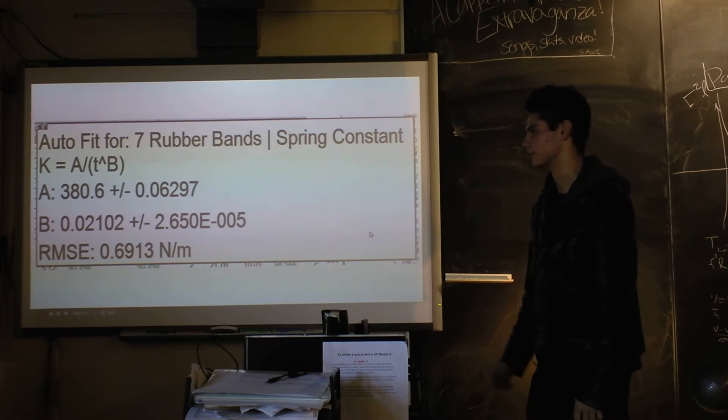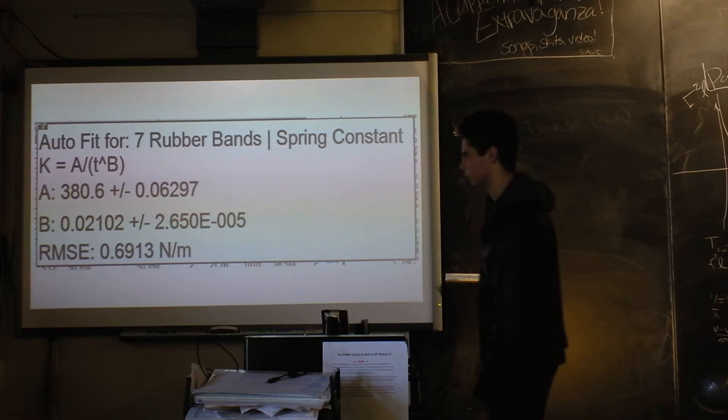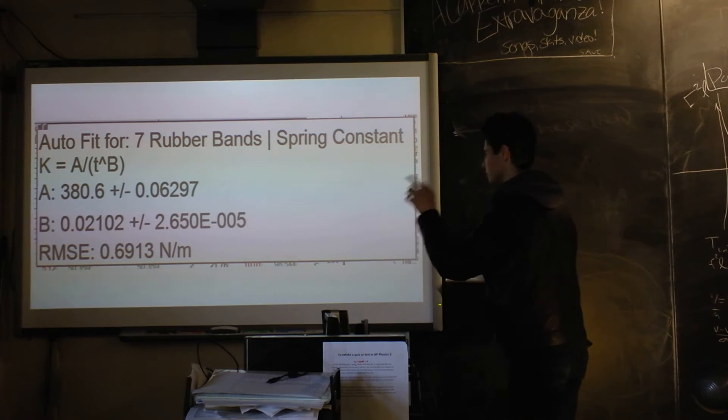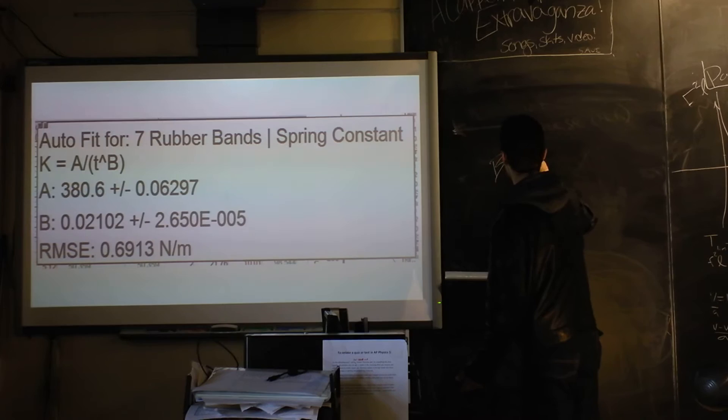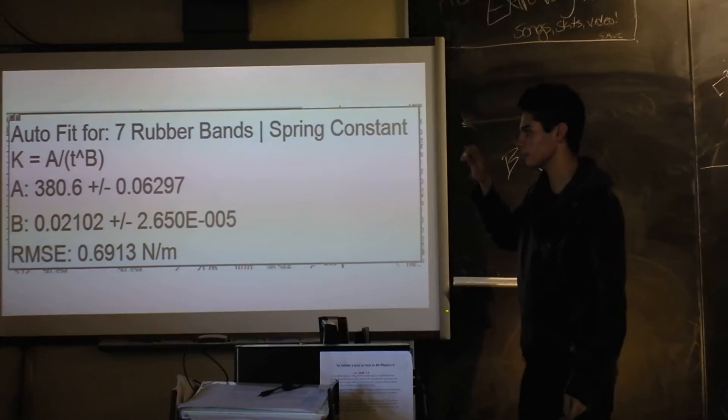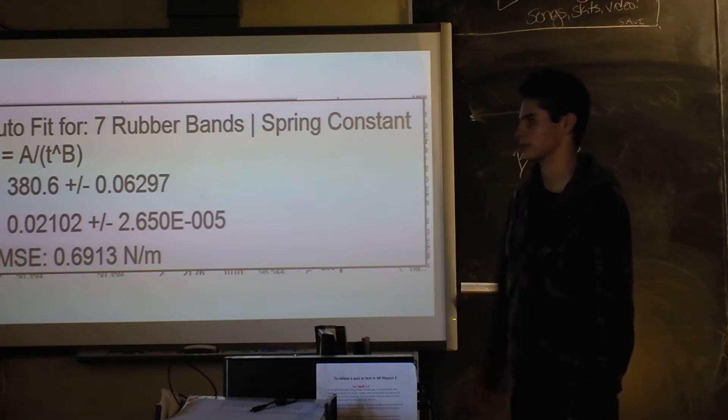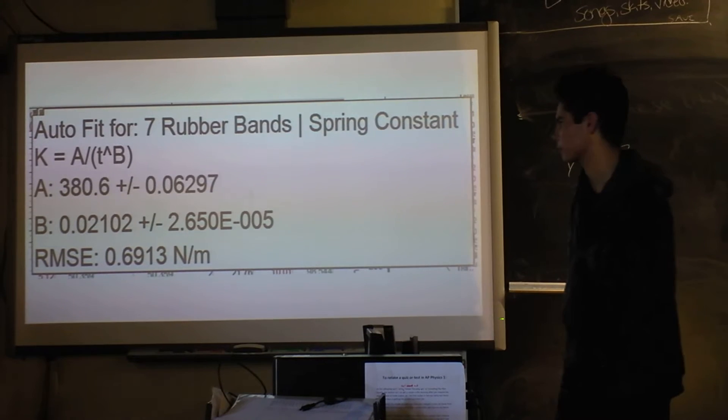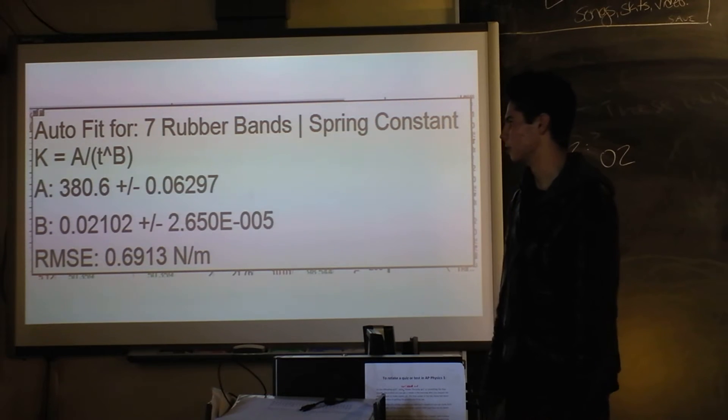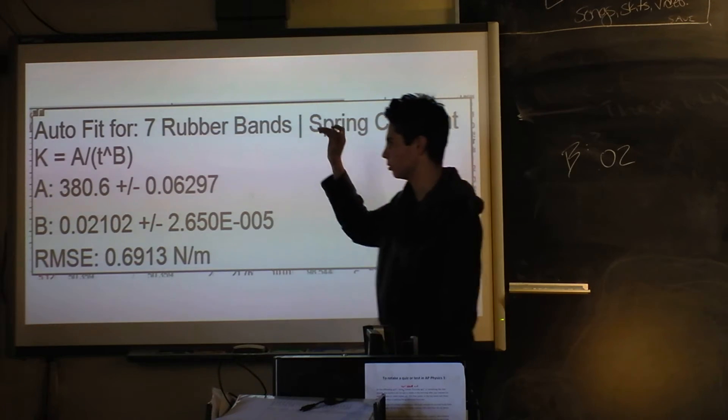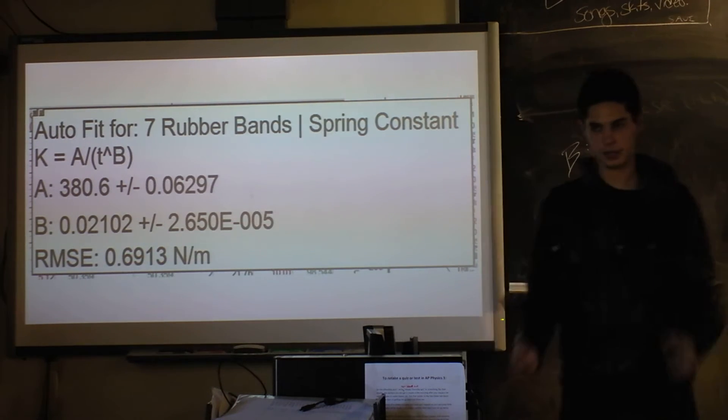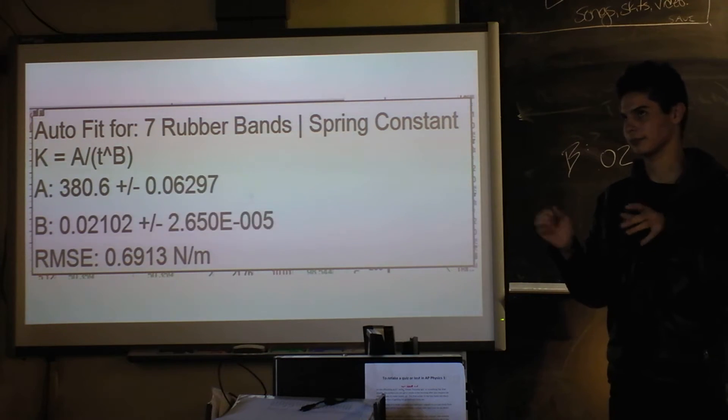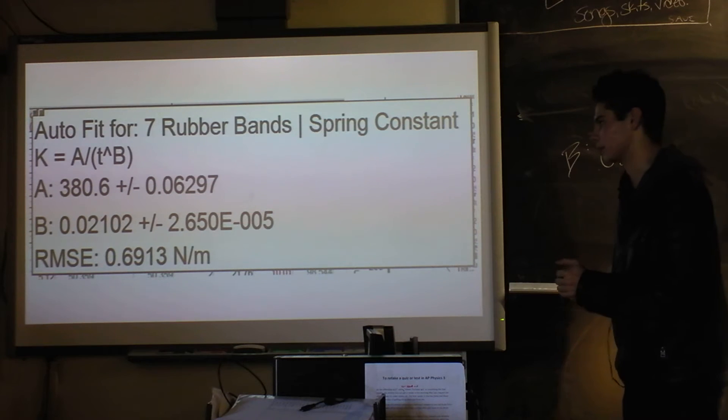This is an example of the fit. As a general rule, B was almost always 0.02. It averaged 0.020004 or something. And A was always the initial spring constant - initial meaning in a perfect real world, ideally.